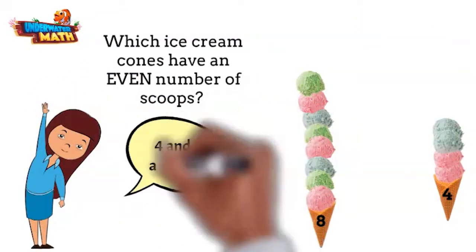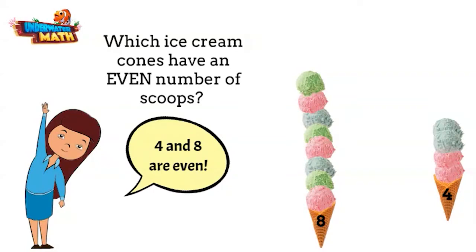Looks like Bethany will be having the cone with 4 scoops and 8 scoops. Don't forget your cherries on top.